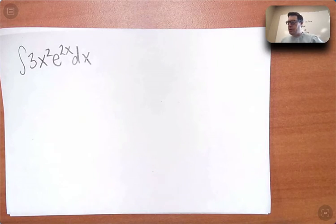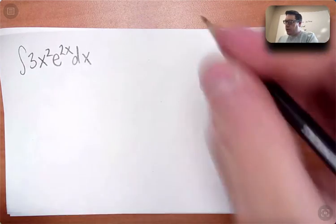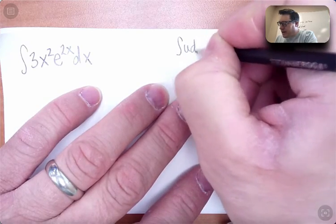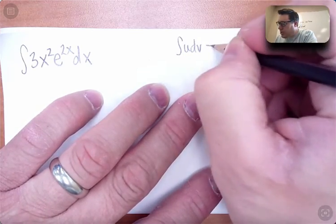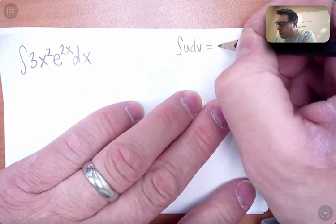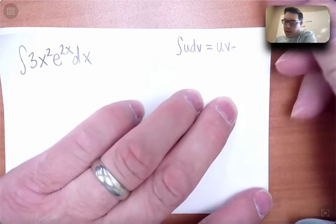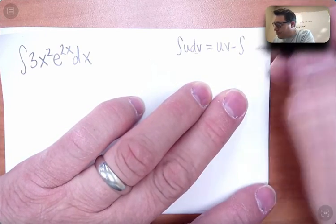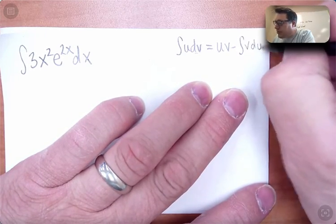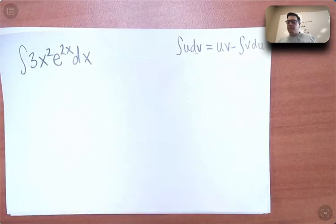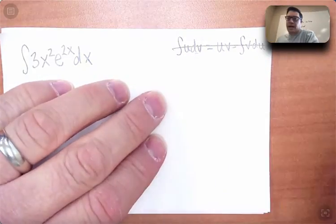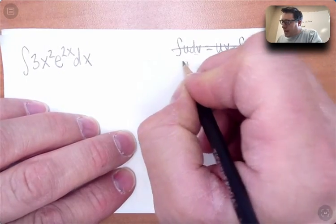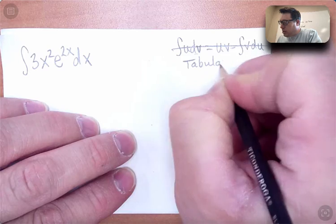Instead of right away starting with the formula, which for reminders, I will put it up here. It is identifying the U and DV functions and then looking for the way that you can use the work on the side to identify not just DV, but its anti-derivative V, and then using V and the derivative of U together. That's the whole formula. But instead of using that, what I want to use is something that relies on it, points at it, but it's called tabular integration.